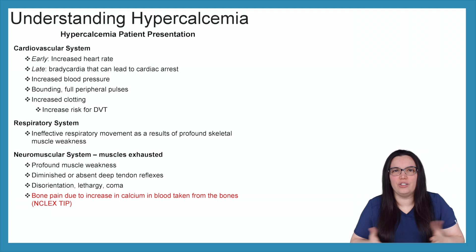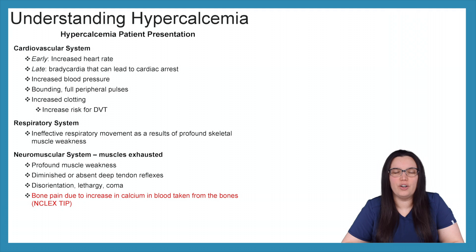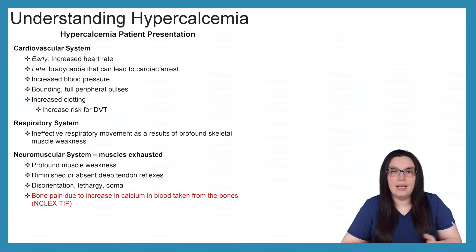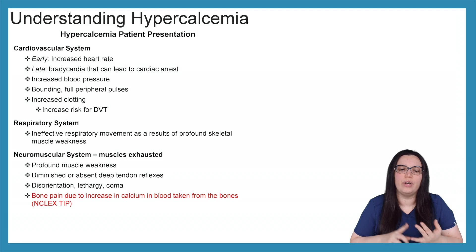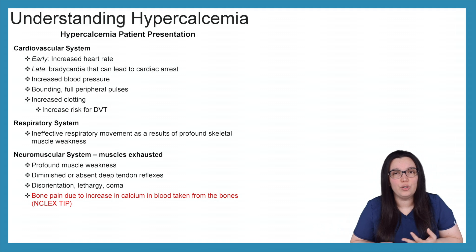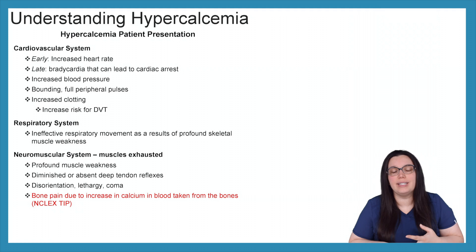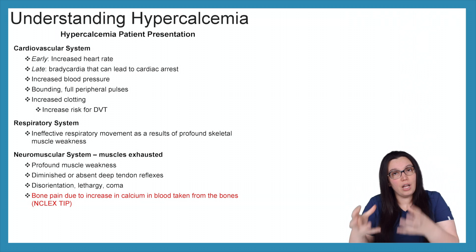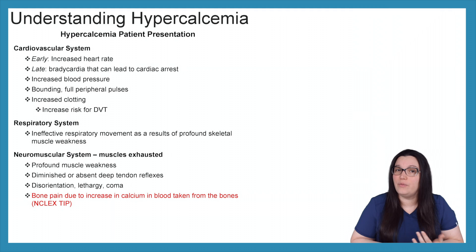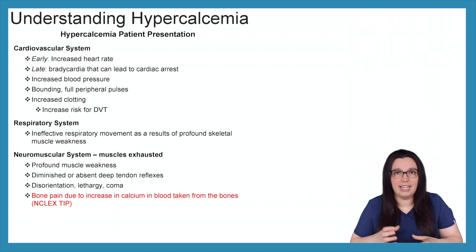So what is our patient going to look like — what is the patient presentation? When it comes to the cardiovascular system, an early sign of hypercalcemia is an increased heart rate. Later on, if it's not corrected in the early stages, you're going to start to see bradycardia that can ultimately lead to cardiac arrest. You're going to see an increase in blood pressure, bounding full peripheral pulses, and increased clotting, which will ultimately increase your risk of developing deep venous thrombosis.